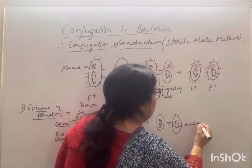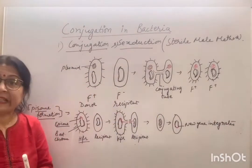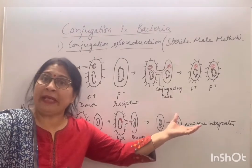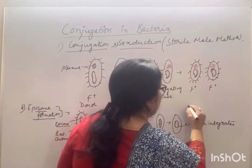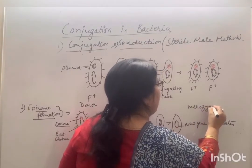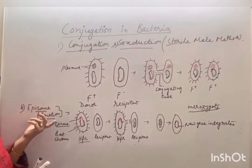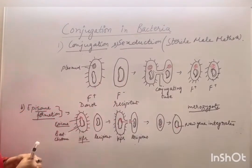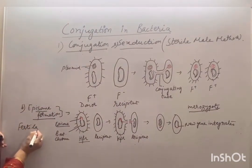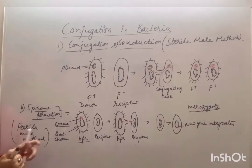The new gene that is transferred either integrates with the recipient's bacterial chromosome or replaces part of it. This method is called the incomplete deployed male method, also referred to as the fertile male method, which is the epizome formation process.